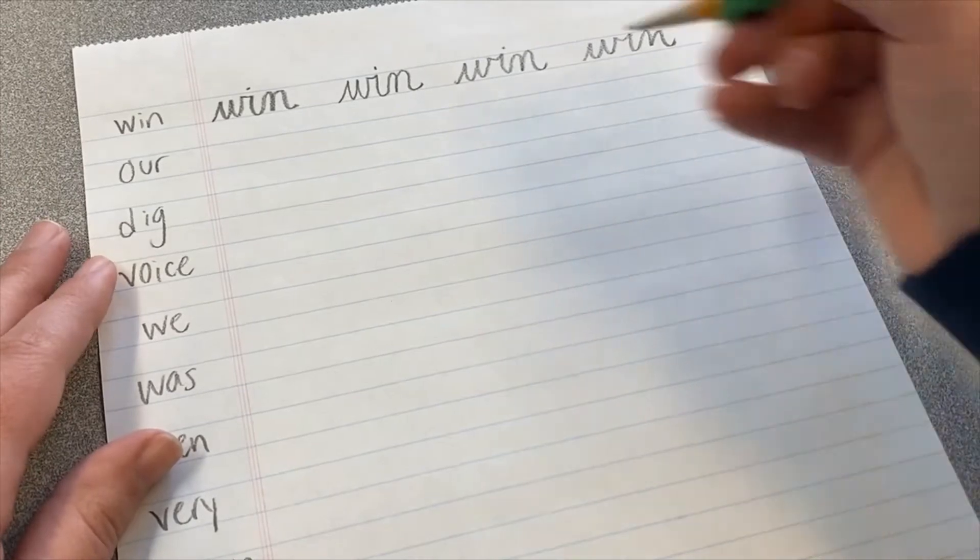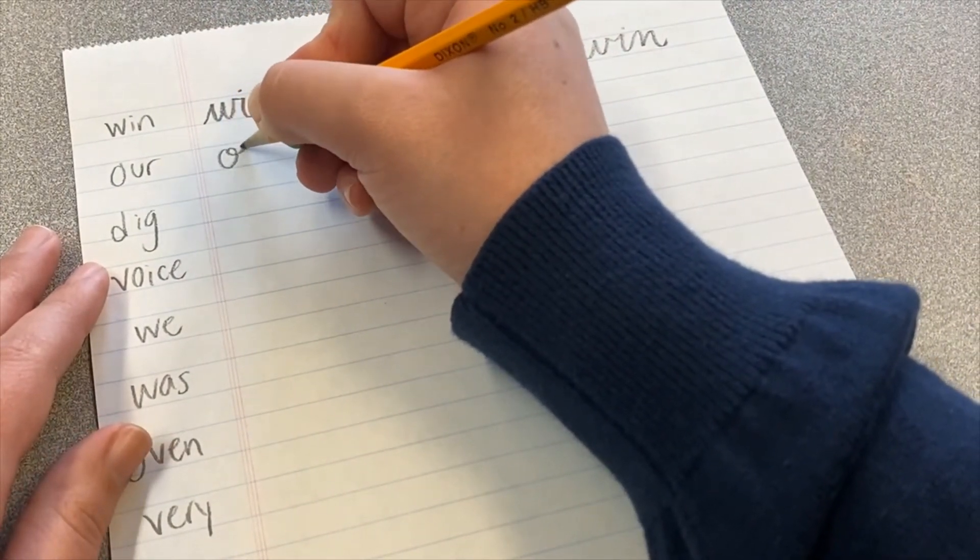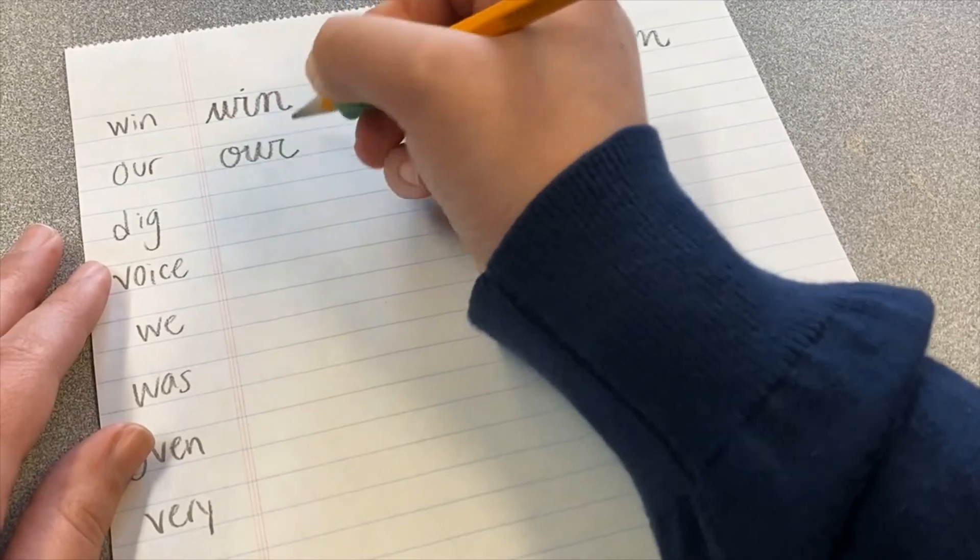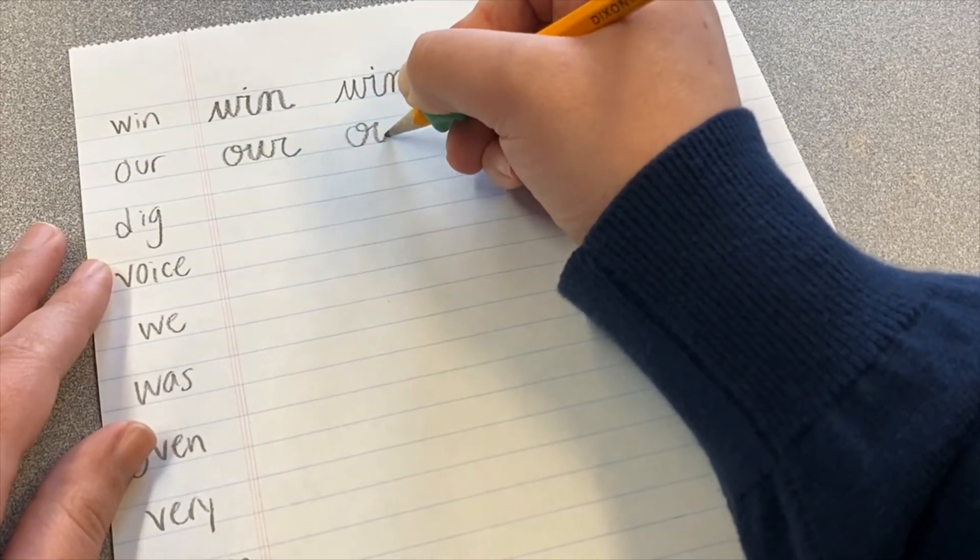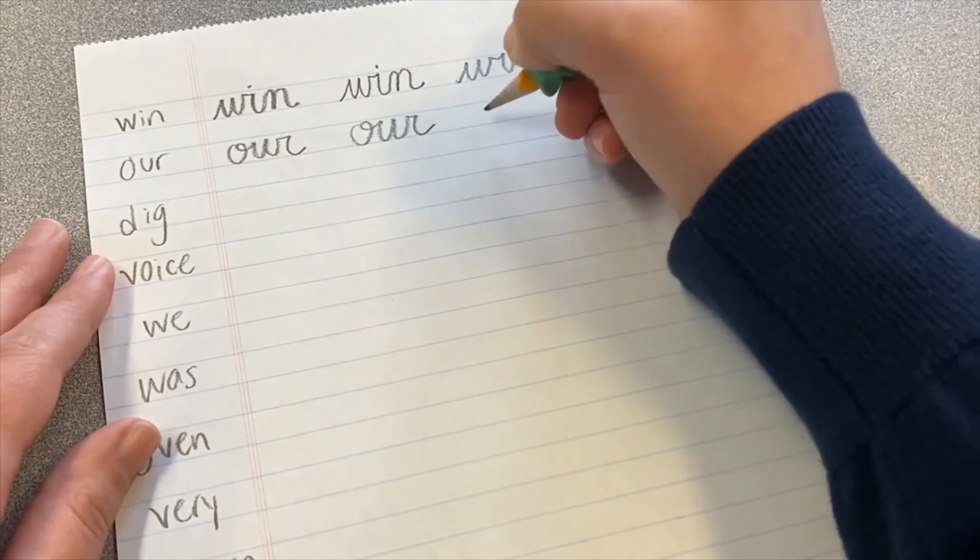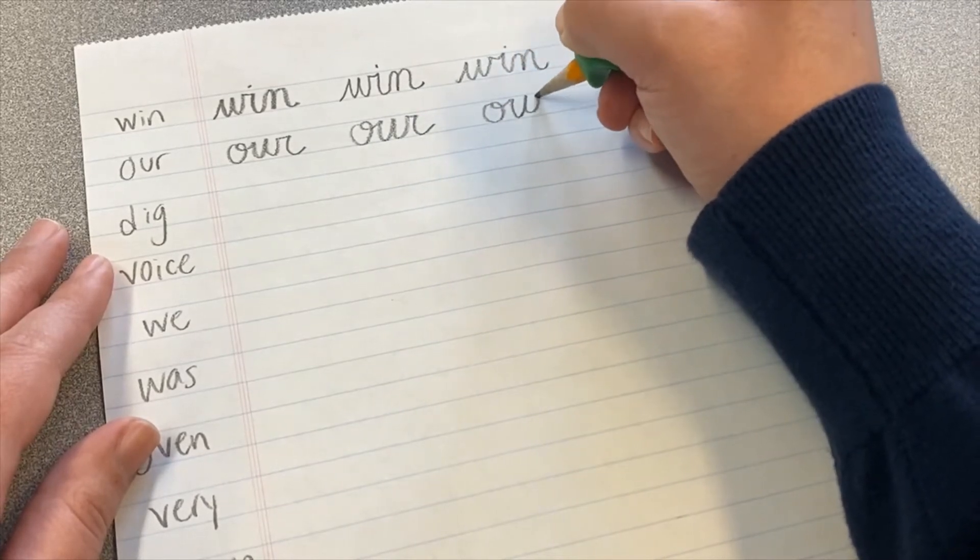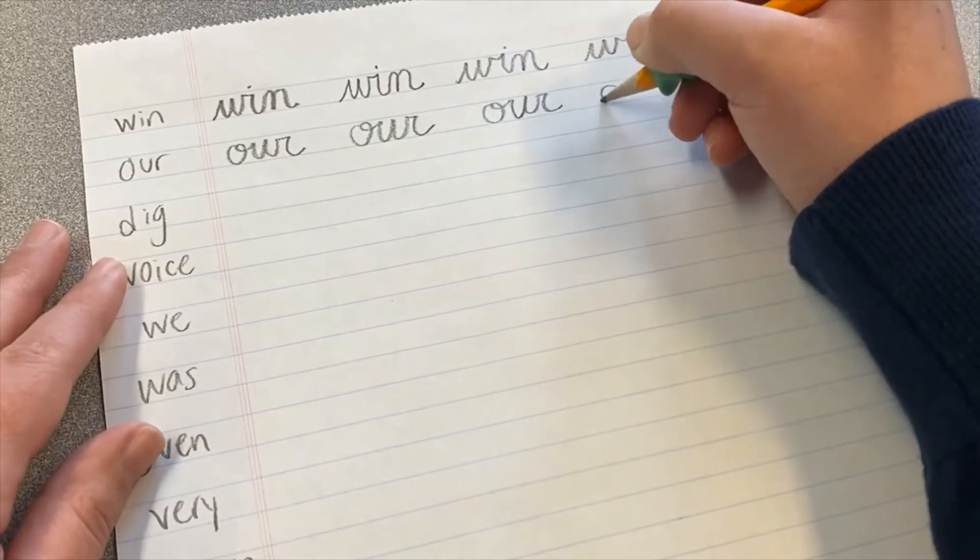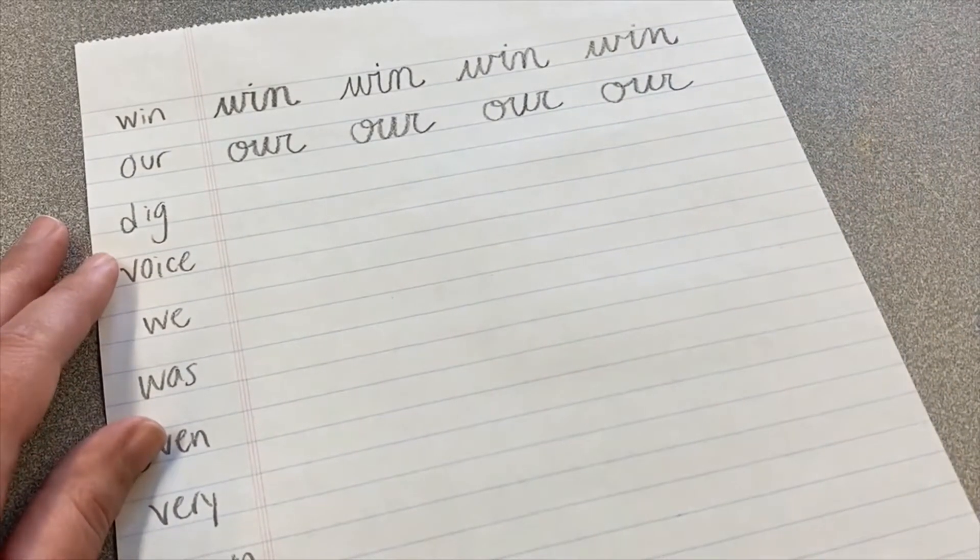The next word is the word our, O-U-R. We've got the O, and it goes right into the U, and then it makes the R.